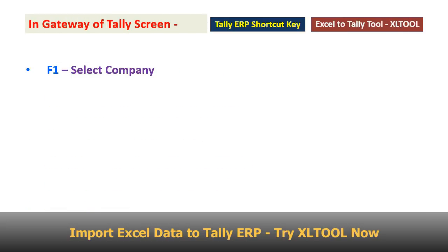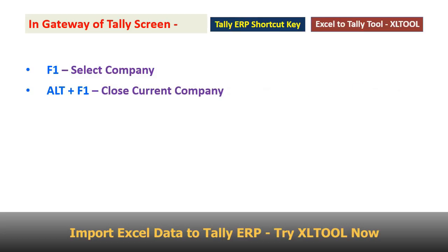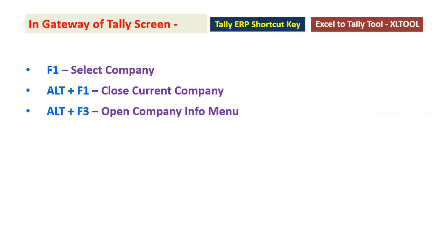F1: Select Company. Alt F1: Close Current Company. Alt F3: Open Company Info Menu.